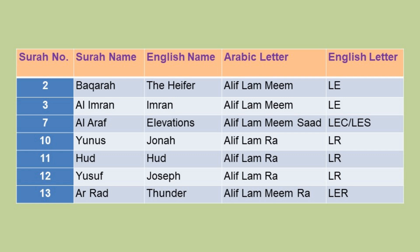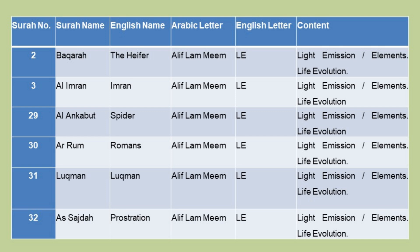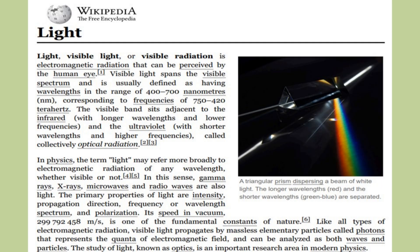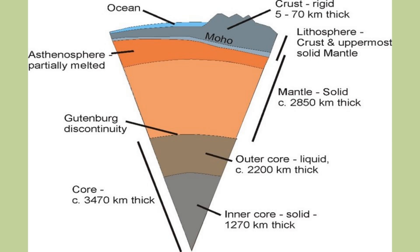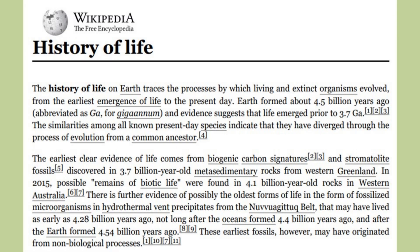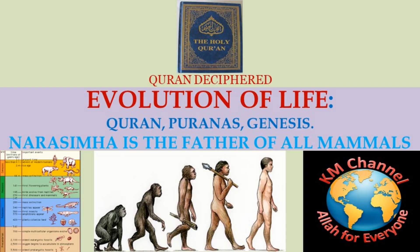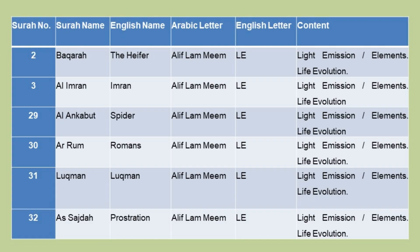First, grouping them according to their headings: Chapter 2 — Alif Lam Mim — LE — Light Emission, Life Evolution. This chapter is about light and its elements, planets, earth layers, life evolution, etc. It also explains about the linear equation. Chapters 3 and 29 are also Alif Lam Mim — LE — Light Emission, Life Evolution.